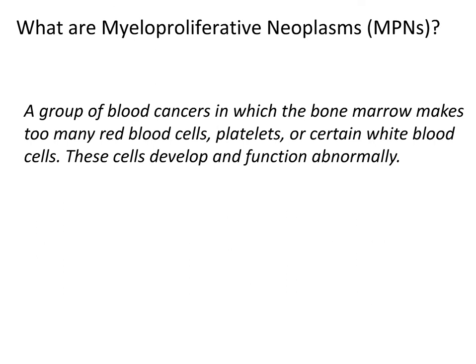So what are myeloproliferative neoplasms, or MPNs? This is a group of blood cancers where, in the bone marrow, something has changed so that the bone marrow starts to produce too many of one particular type of blood cell — red blood cells, platelets, or certain types of white blood cells. This is seen clinically with an elevated hemoglobin, hematocrit, elevated platelet count, or elevated white blood cell count. I'll draw the distinction between MPNs and myelodysplastic syndrome, or MDS, where typically you have the opposite situation — low blood counts.